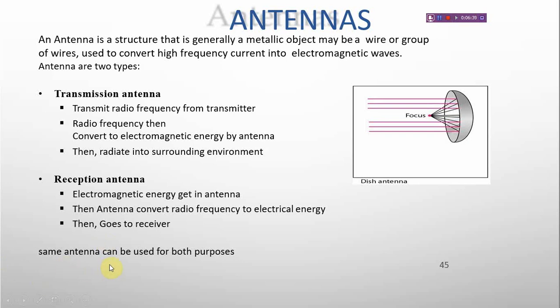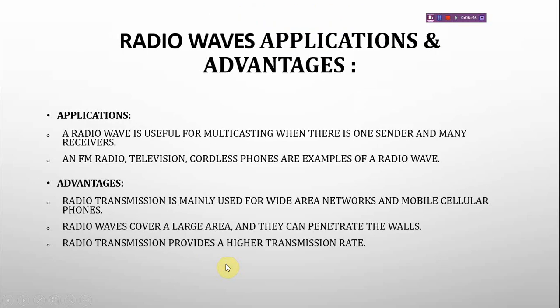The same antenna can be used for both transmission and reception. Radio waves are useful for multicasting when there is one sender and many receivers. Examples include FM radio, television, and cordless phones. Radio transmission is mainly used for wide area networks and mobile cellular phones. Radio waves cover a large area, can penetrate walls, and provide a higher transmission rate.